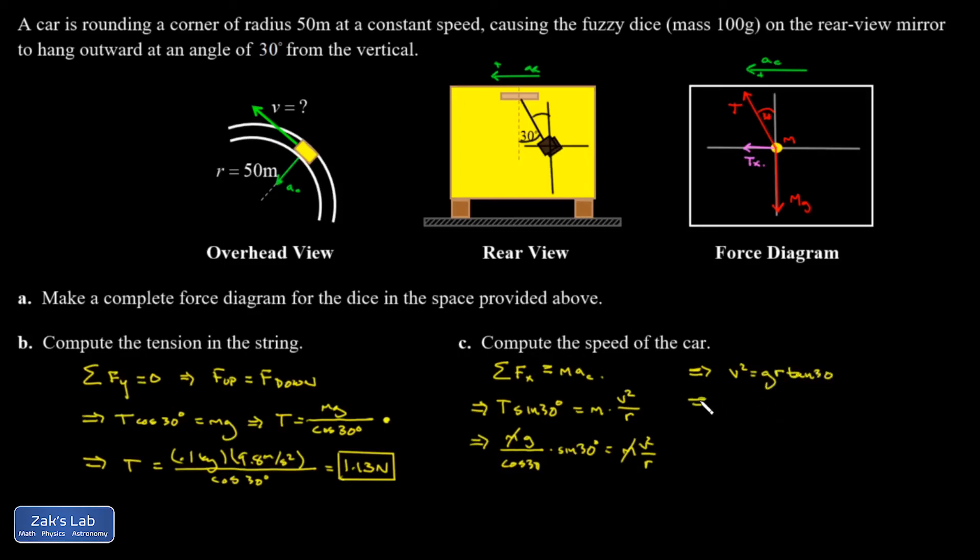And finally, we'll take the square root. And when I plug in there, I get 9.8, radius of curvature for the turn was 50 meters, tangent of 30 degrees. And that comes out to 16.8 meters per second.